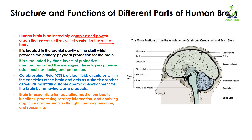The brain is located in the cranial cavity of the skull, which provides the primary physical protection of the brain. Within the skull, this empty part contains the brain, which is known as the cranial cavity. The brain is surrounded by three protective membrane layers known as meninges. These layers provide additional cushioning and protection — like a wrapping paper covering a parcel, where the parcel is your brain.